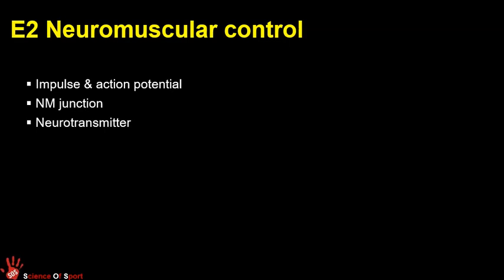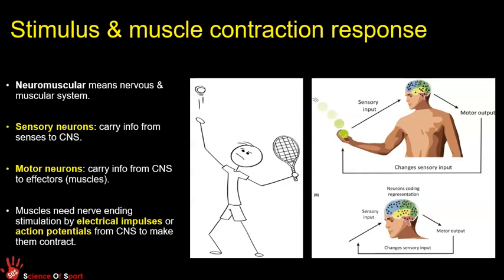Many sporting actions happen in a stimulus-response way. Something in our environment acts as a stimulus — in the slide image there's a tennis player and a tennis ball, and our brain helps us respond to it. In football, a ball coming towards you is the stimulus, and your brain sends instructions to muscles all over your body to enable you to jump and head it or step forward and kick it.